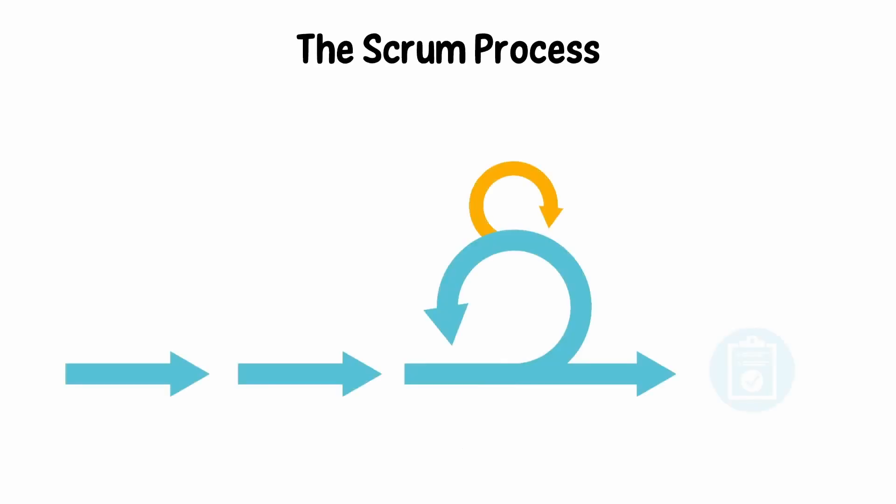The Scrum Process. Sprint: this is a set period of time during which specific work has to be completed and made ready for review. Team members plan what they'll do and set frequent meetings.